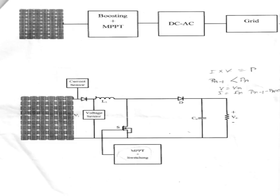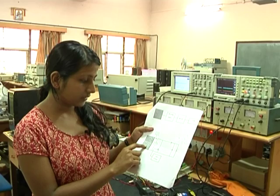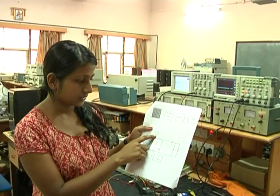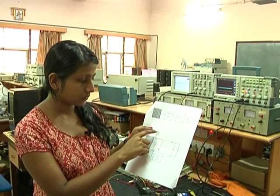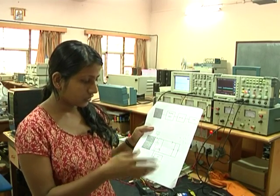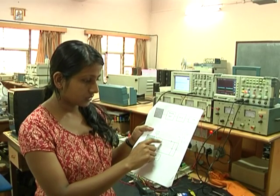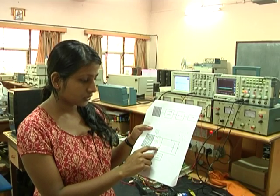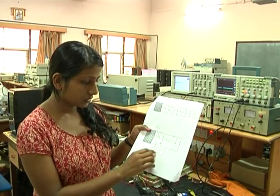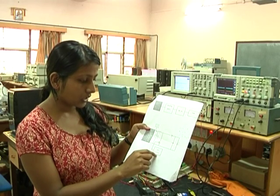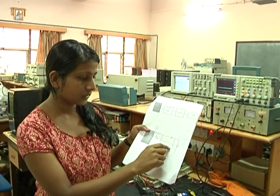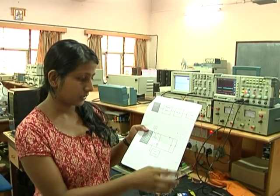This is the circuit diagram of the boost converter. The PV array is connected to a voltage sensor and also a current sensor — all the time we sense current and voltage and track the maximum power point. This is a simple boost converter where L1 is the inductor and S is the switch. The switching signal does MPPT plus switching in one microcontroller chip, and this is the output load connected to the boost converter.